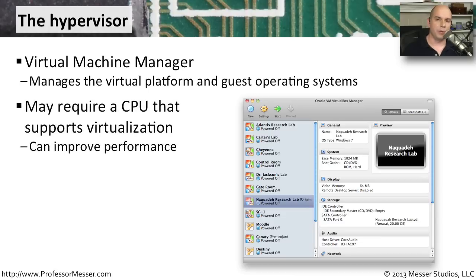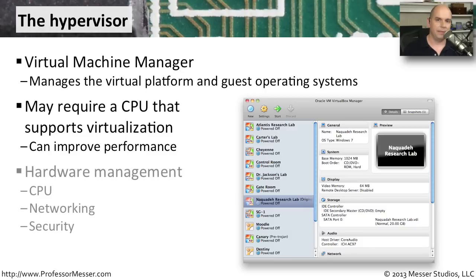Some hypervisors require that the physical CPU inside your computer have virtualization technology built into it. Intel calls this VT technology, and if you're running an AMD chip, AMD calls this AMD-V. The hypervisor then provides all the management needed for physical resources — it takes care of CPU, memory, disk space, network access, and everything else that bridges the gap between the physical world and the virtual one.